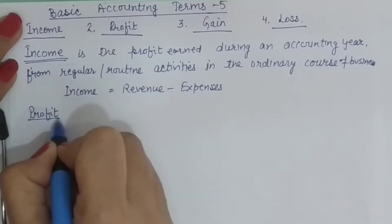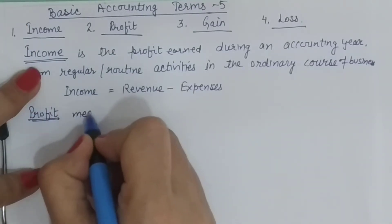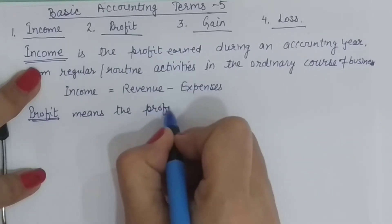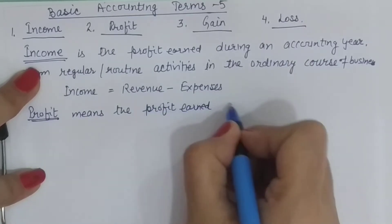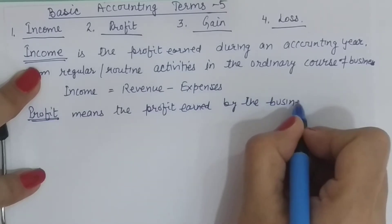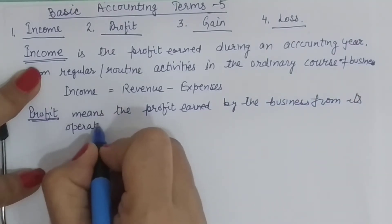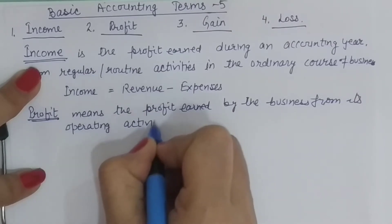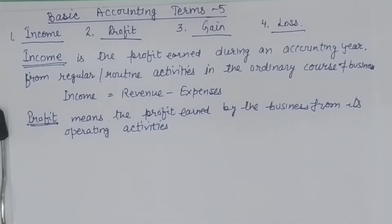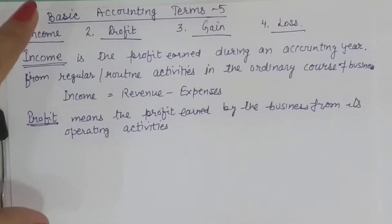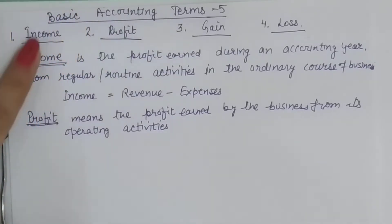Next term hai profit. Profit kya kehlata hai? Profit means the profit earned by the business from its operating activities. Matlab business ka jo main activity hai, jo main uska kaam hai, us activity se jo profit milta hai, usse hum bolte hain profit. Viesse yeh terms interchangeably use hoti hain — profit bhi bolte ho, income bhi bolte ho. But jab accounting mein yeh terms use karte hain, to inke meanings alag-alag hain. So jo operating activities se aapko jo fayda hoga, usse bolenge profit. To operating revenue aur operating expenses ke difference ko bolte hain profit.